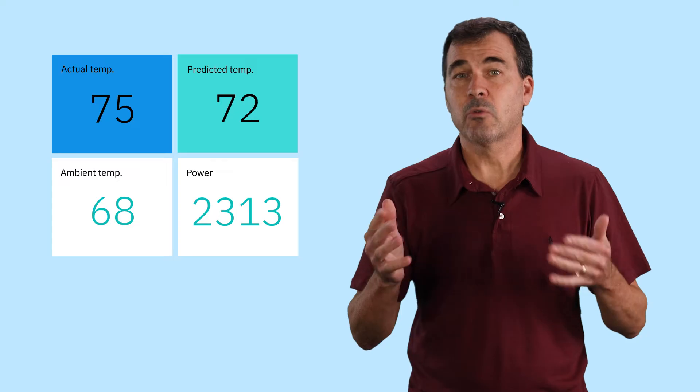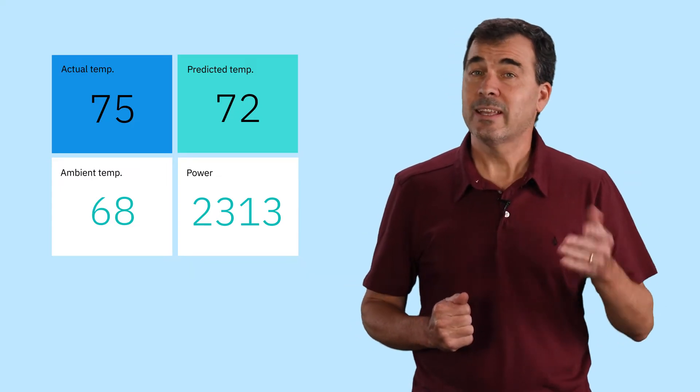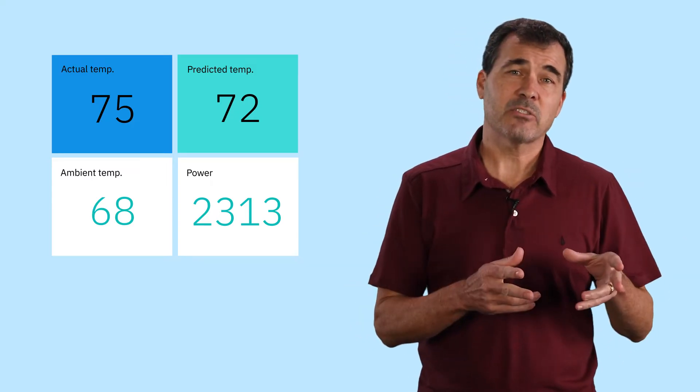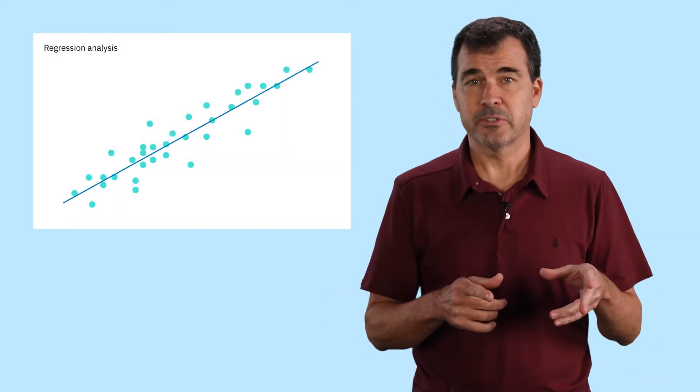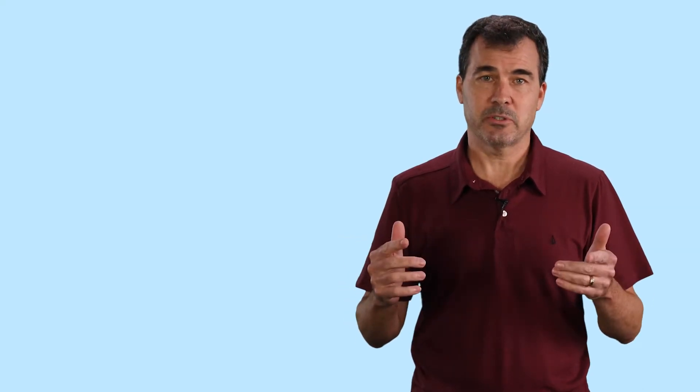Back to our factory. We can train a model to predict what a robot's temperature should be, given how hot it is in the factory and the robot's power consumption. With that model, we can compare the predicted temperature to the robot's actual temperature.